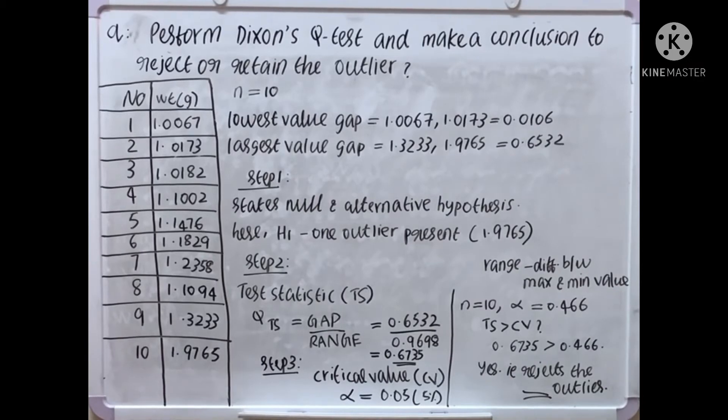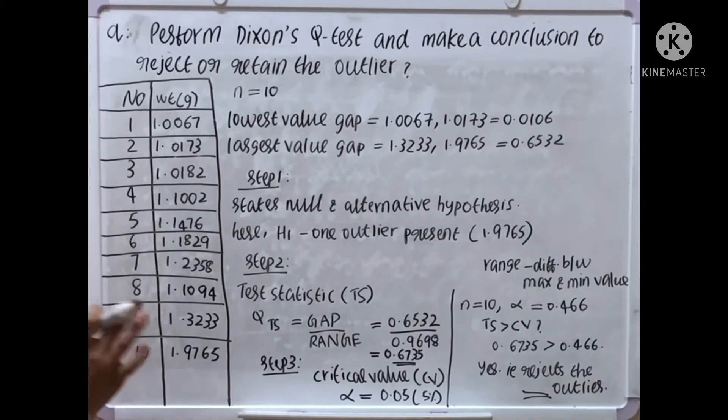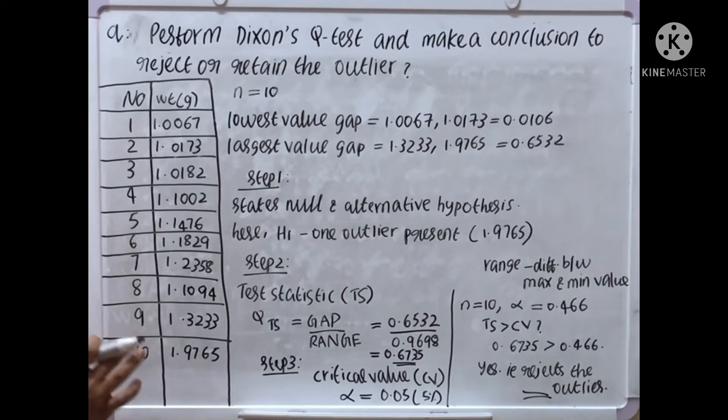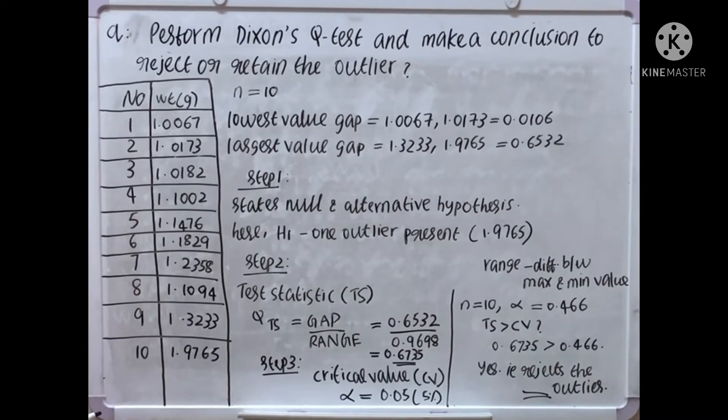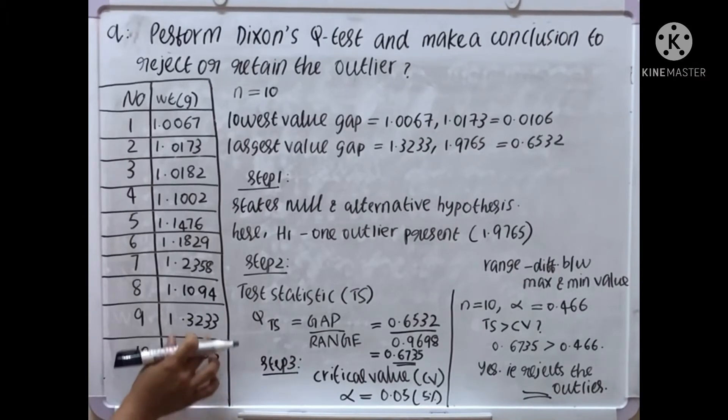Here we get one outlier, that is 1.9765. Step 2: Test statistic, TS. Q subscript TS equal to gap divided by range. Gap means the large value gap we get. Outlier 1.9765, that gap 0.6532. Now 1.9765 minus 1.3233.